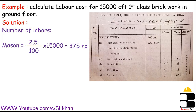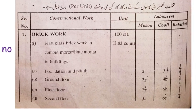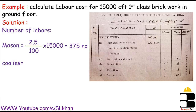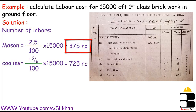We can do the same thing for coolies and watermen. If you look at the coolies column, that's 4 and 5/6 coolies per 100 CFT. So if we need 4 and 5/6 coolies per 100 CFT, then how many do we need per 15,000 CFT? The number of coolies equals 725 numbers. It is a huge number — 375 masons — but remember, that's not the point. We don't bring 375 masons to a specific work at once; this is just for calculating the cost of labor.